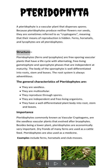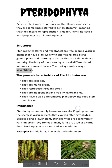Structure: Pteridophytes — ferns and lycophytes — are free-sporing vascular plants that have a life cycle with alternating, free-living gametophyte and sporophyte phases that are independent at maturity. The body of the sporophyte is well differentiated into roots, stem, and leaves. The root system is always adventitious.